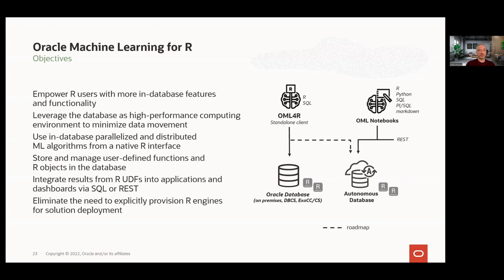The objectives of OML4R are to empower R users with in-database features and functionality so they can take advantage of the database as a high-performance computing environment, minimize data movement, and scale solutions. Through an R interface, you can leverage machine learning algorithms, as well as store and manage R objects like machine learning models directly in the database, avoiding the need to manage flat files. You can also integrate results from user-defined R functions in applications and dashboards using SQL and REST, and eliminate the need to explicitly provision R engines for solution deployment.